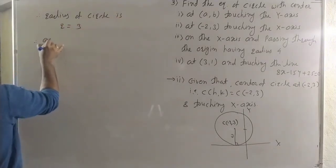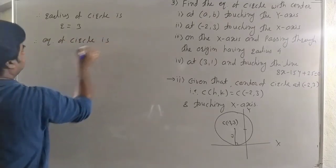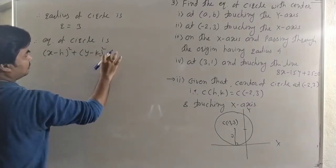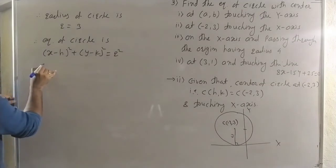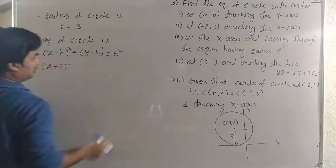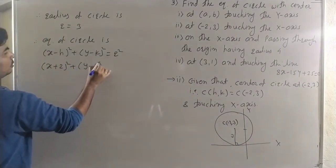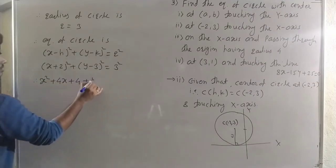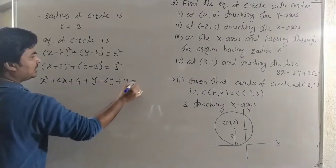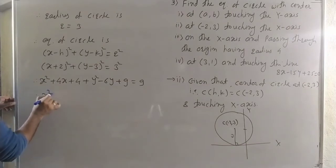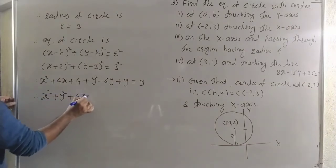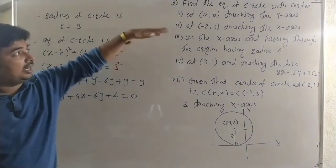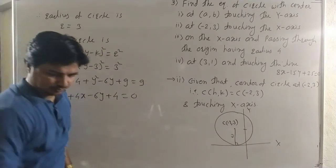With center (-2, 3) and radius 3, the equation of circle is (x - h)² + (y - k)² = r², giving (x + 2)² + (y - 3)² = 9. Expanding: x² + 4x + 4 + y² - 6y + 9 = 9. The 9s cancel, so the equation of circle is x² + y² + 4x - 6y + 4 = 0, which is the circle with center (-2, 3) touching the x-axis.